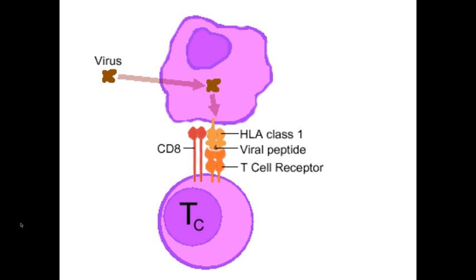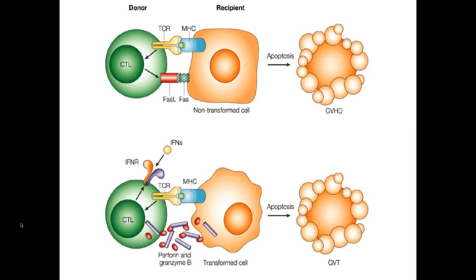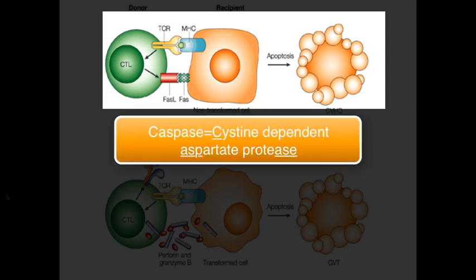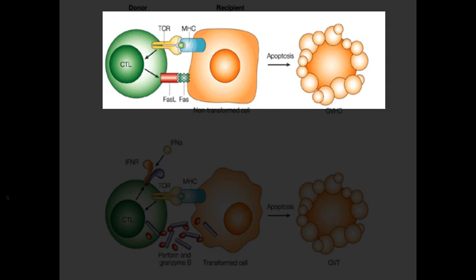Once this has occurred, your cytotoxic T cell now proceeds to kill the target cell. There are two types of killing mechanisms. The first is by expressing a molecule called FAS ligand, which will go and bind on a receptor called FAS on the cell to be killed. This will initiate a group of proteins called caspases — enzymes that will digest the affected cell and induce apoptosis, meaning programmed cell death.